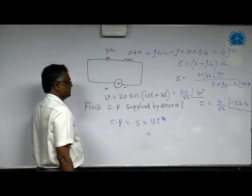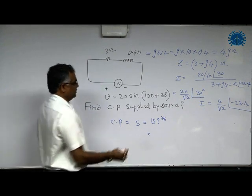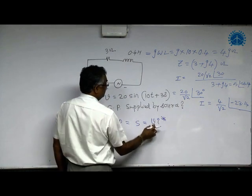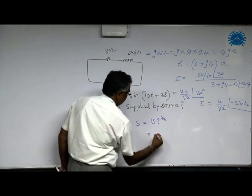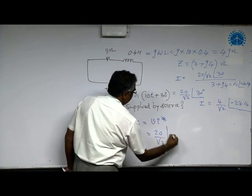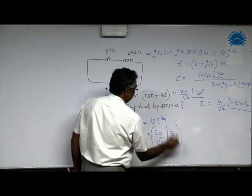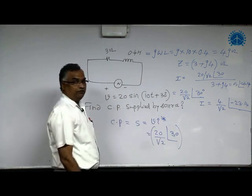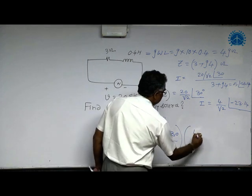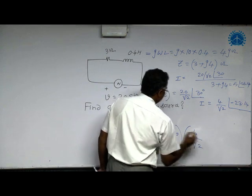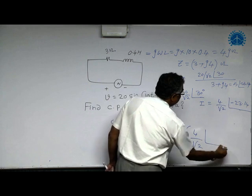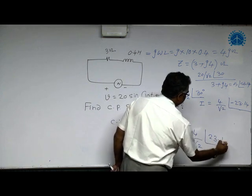This small V indicates voltage with angle, and this small I indicates current with angle in VI star. So V is 20 by root 2 at angle 30. Then current we need to take in terms of complex conjugate. This star indicates complex conjugate. 4 by root 2, when we go for complex conjugate, the angle changes—minus becomes plus—so 23.14.